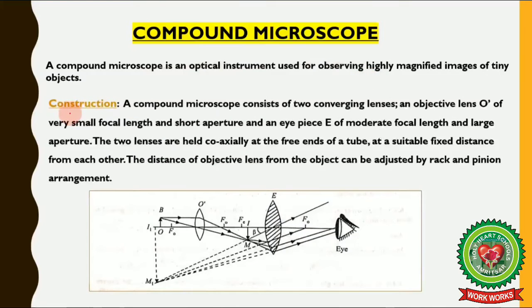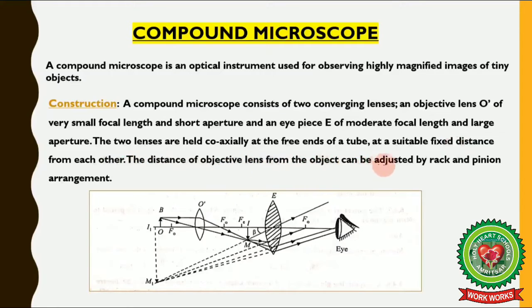A compound microscope consists of two converging lenses: an objective lens O of very small focal length and short aperture, and an eyepiece of moderate focal length and large aperture. The two lenses are held coaxially — meaning their centers are aligned — at a suitable fixed distance from each other. The distance of the objective lens from the object can be adjusted by a rack and pinion arrangement.